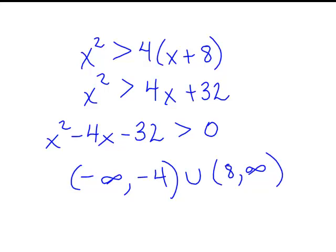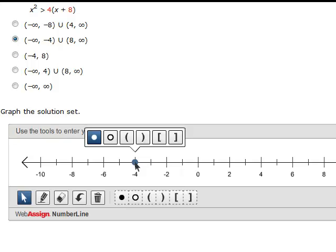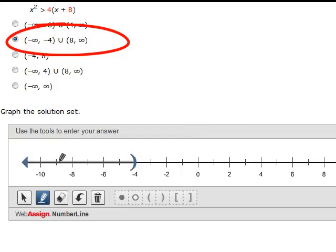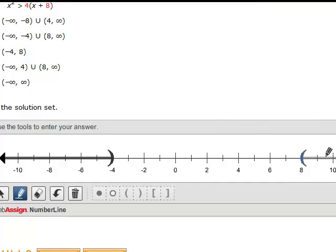How do we put this into WebAssign? I'm going to go to the pointer. I'm going to point to negative 4. What do I want to happen at negative 4? I'm going to have the right parentheses. I'm going to grab my pencil and shade there. That is negative infinity up to negative 4. Grab the pointer again at 8. I'm going to grab the left parentheses. Then grab my pencil. Tell it to graph.